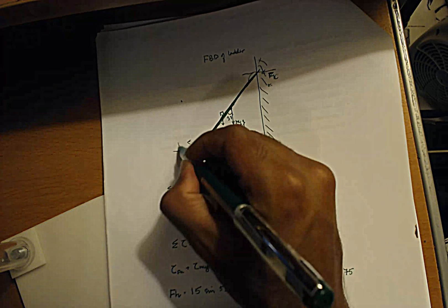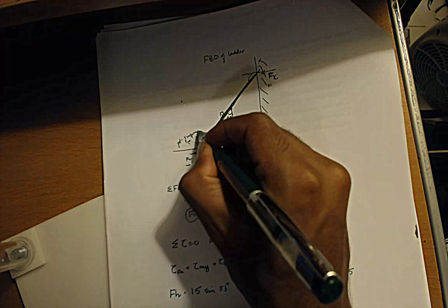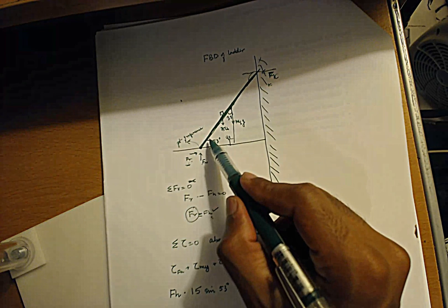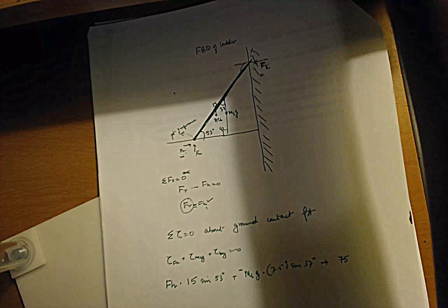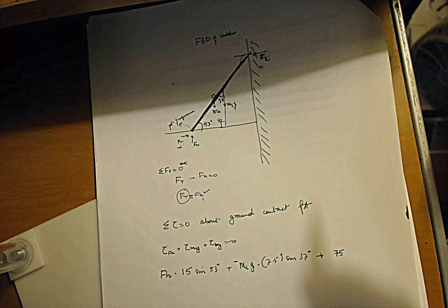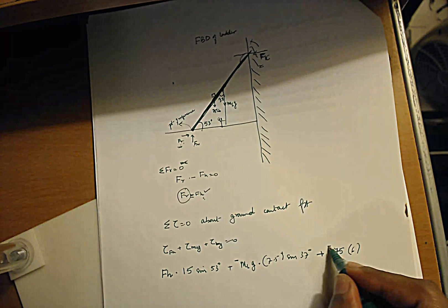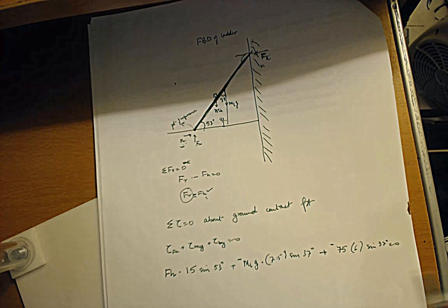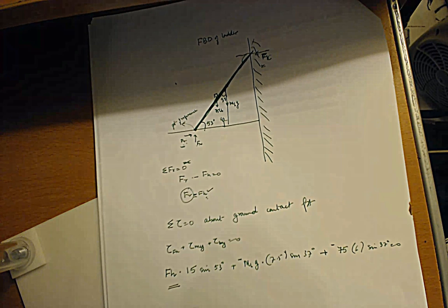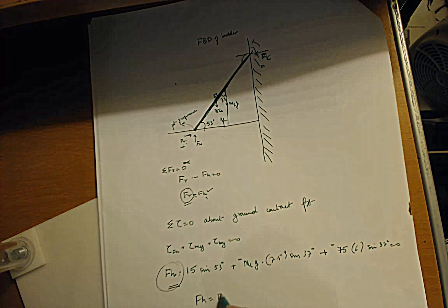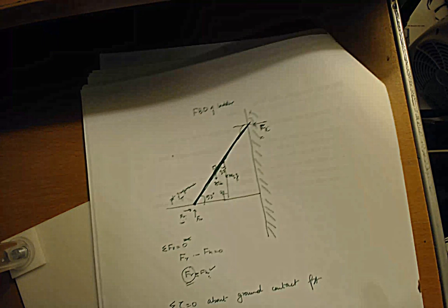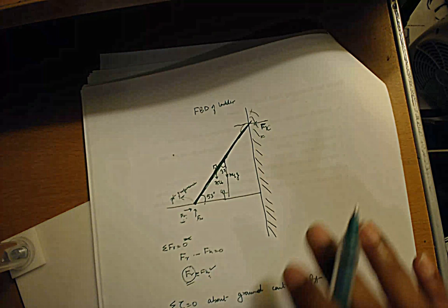The torque due to the weight of the boy is 75 pounds times 6 feet up the ladder — that's our reference point distance. It also rotates clockwise, so it's negative, and the angle is again 37 degrees. So: negative 75 times 6 times sine 37 equals zero. Now we solve for FH — it's the only unknown. FH equals FR, so finding FH gives us the frictional force.